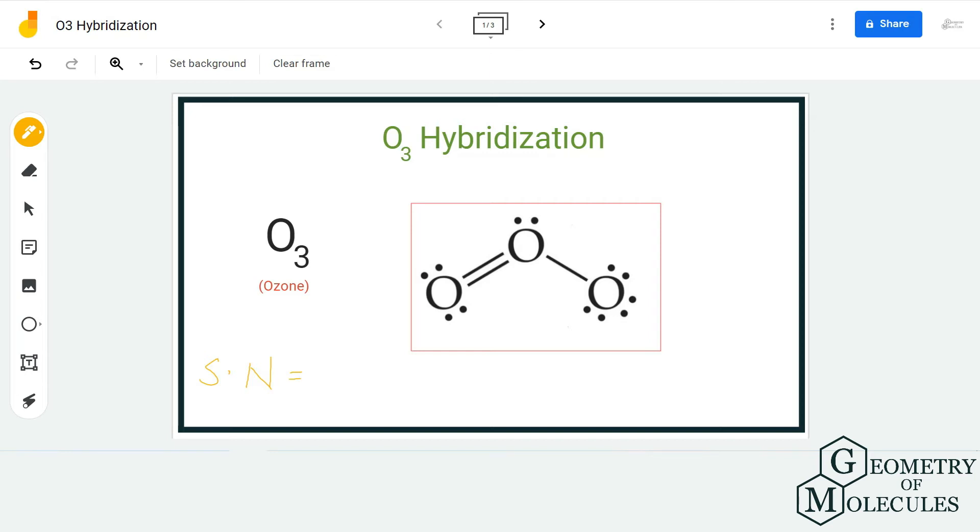pairs. So when you look at the ozone molecule over here, it forms two sigma bonds because in this double bond there will be one sigma bond and the other one will be a pi bond. This is also a